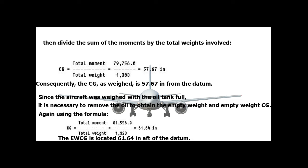The CG as weighed results in a value from the datum — in this example, 57.67 inches. Since the aircraft was weighed with the oil tank full, it is necessary to remove the oil weight and its moment to obtain the actual empty weight and empty weight CG. Again using the formula CG = Total Moment ÷ Total Weight, we obtain the EWCG located a specific number of inches aft of the datum.